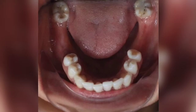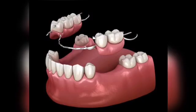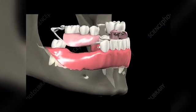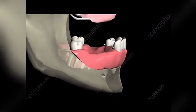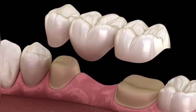Partially edentulous arch. For partially edentulous patients, treatment options can be a removable partial denture, in which the denture can be removed by the patient. Second, it can be a fixed prosthesis.